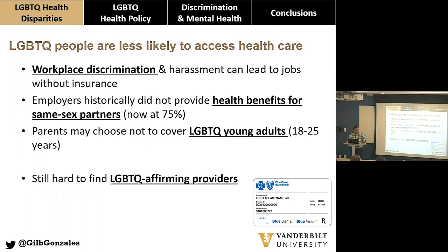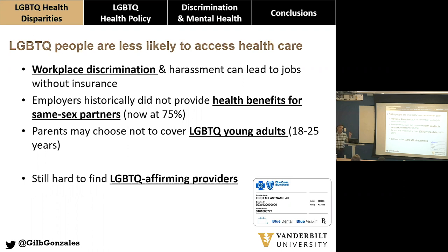Audience: How do you find an affirming provider? Gilbert: There are three ways. One, you just Google it. The Gay and Lesbian Medical Association has a website listing doctors who volunteer to be identified as LGBT-affirming providers. Second, health facilities or systems may have an LGBTQ health office — at Vanderbilt, we have the Program for LGBTQ Health, which navigates patients to affirming providers within the system. The third and most popular way within LGBTQ communities is word of mouth.